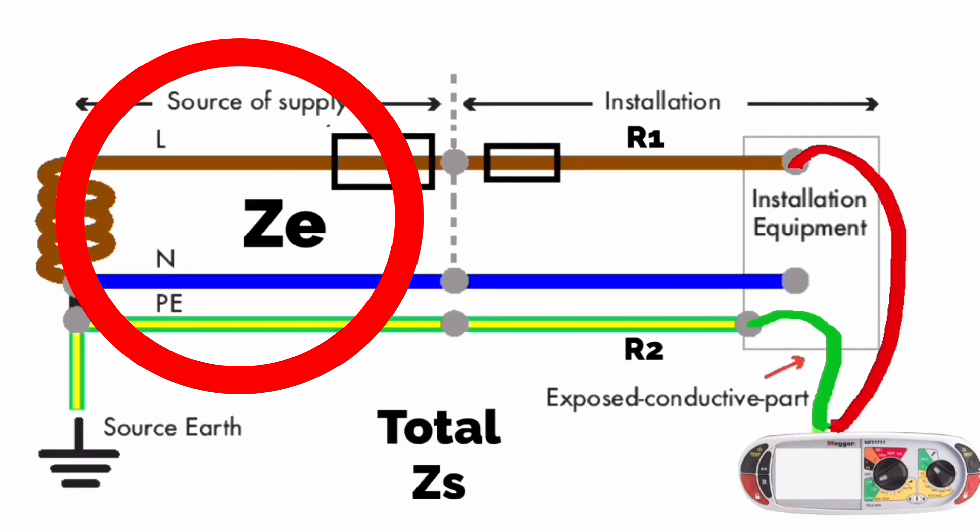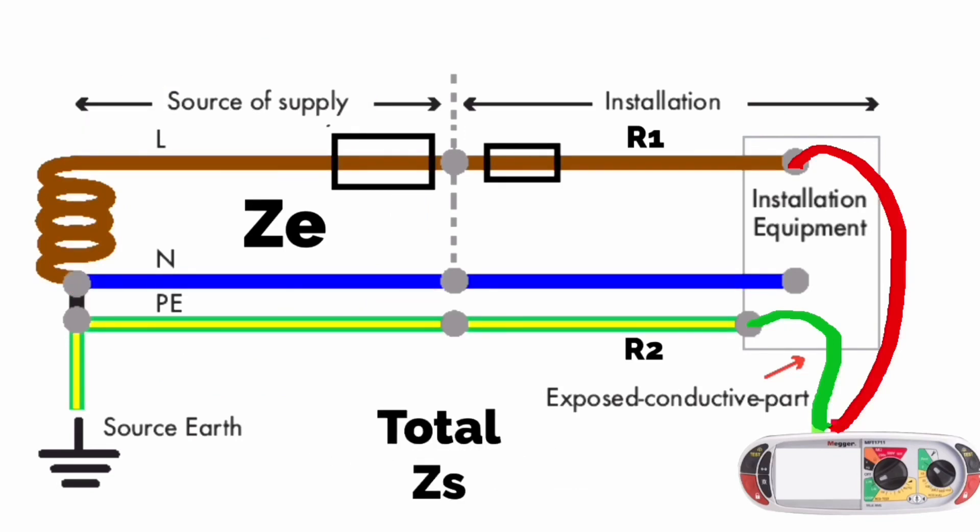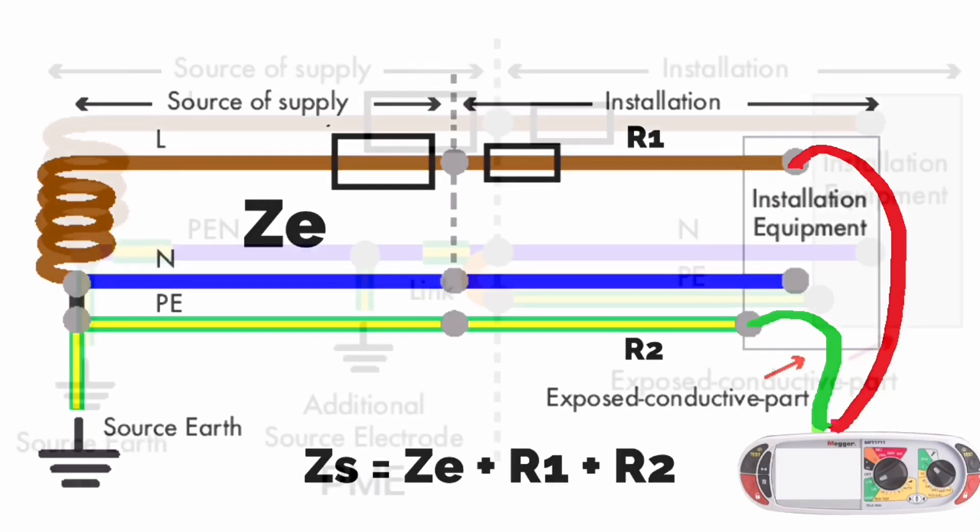The total earth fault loop impedance of a circuit measured in ohms is found by ZS, the total earth fault loop impedance, equals ZE, the supply authority's cable's impedance, added to R1, the line conductor's impedance, added to R2, the circuit protective conductor's impedance. The formula is ZS equals ZE plus R1 plus R2.